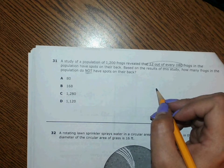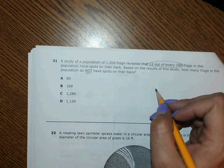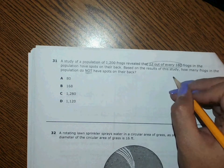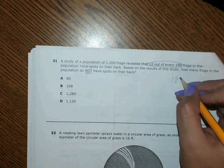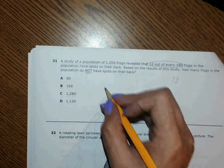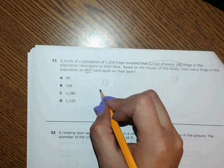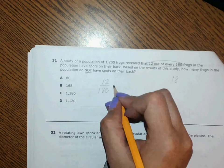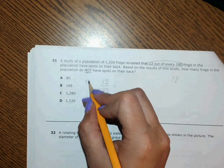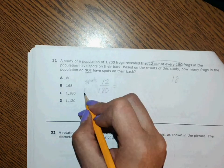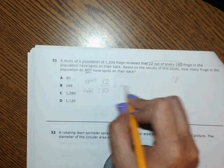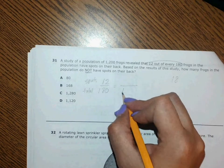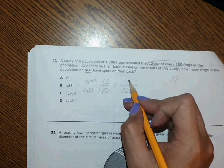Then we could just subtract to figure out how many don't have spots. Let me do it this way: 12 out of 180 is what we got going on. 12 is spots and this is total. Then it's saying that the study was done with 1,200 frogs, and so this is what I would be looking for.